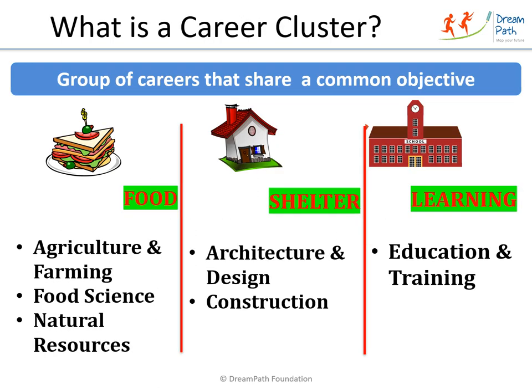To understand career clusters, let us look at the needs of a student — food to eat, a home to live in, and learning — a few basic needs. Which clusters work towards providing us food? Agriculture and farming to grow the food. The food science cluster provides us with packaged food. The natural resources cluster provides us with cooking gas or coal needed for cooking.